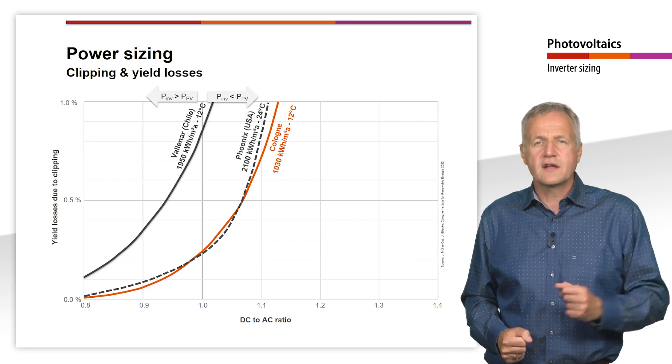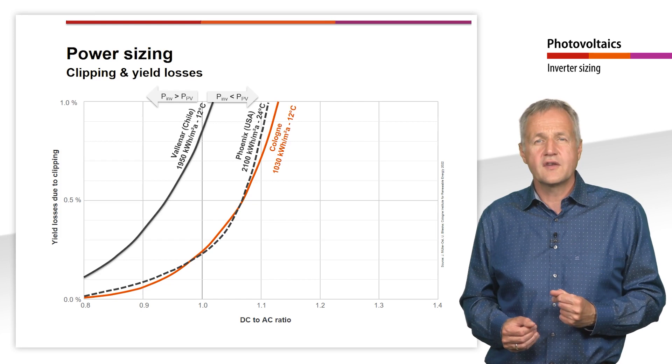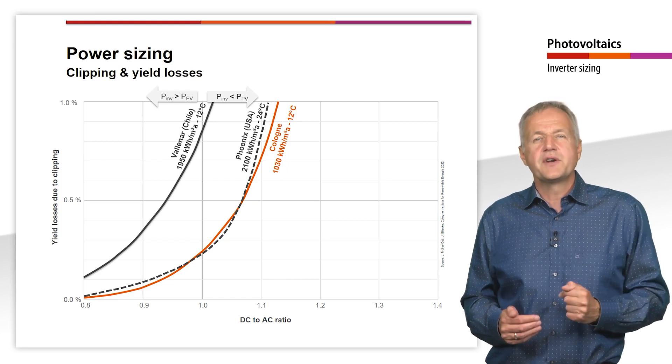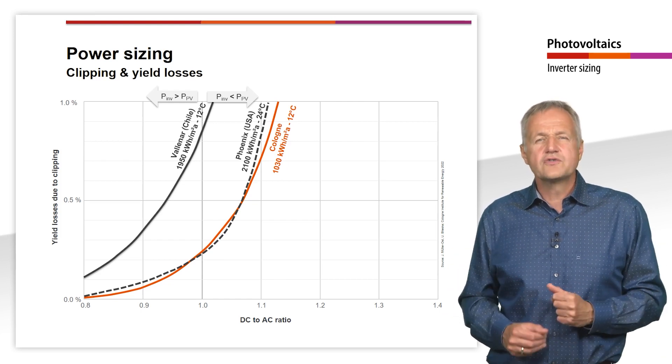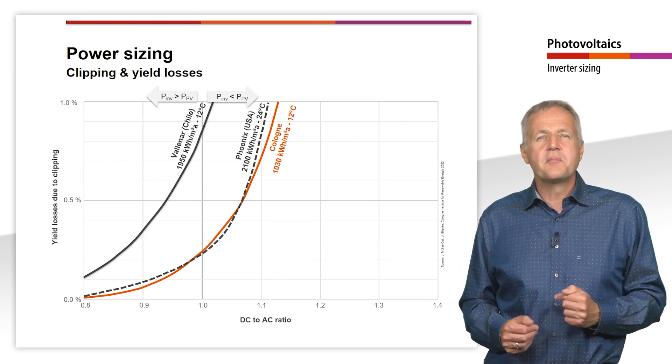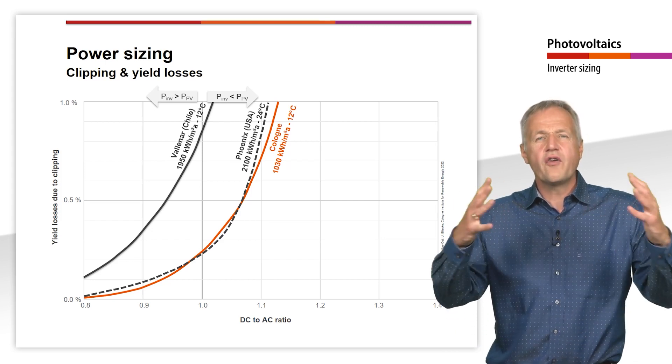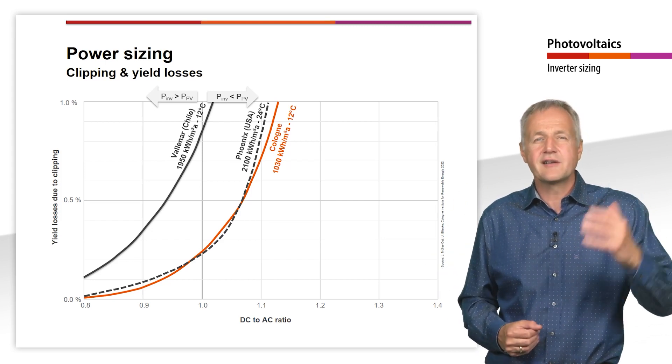As an example, here you can see the yield losses for a plant in Phoenix, USA. The annual irradiation of 2100 kWh per square meter is a bit higher than in Vallenach, but the temperature of 24 degrees Celsius is significantly higher.